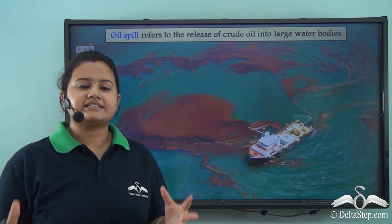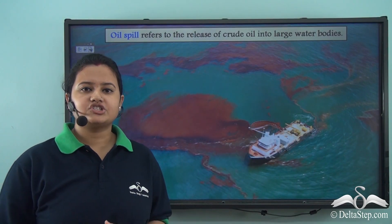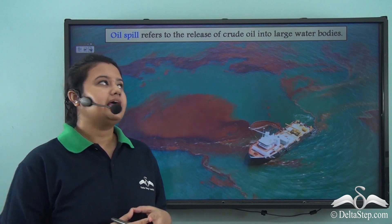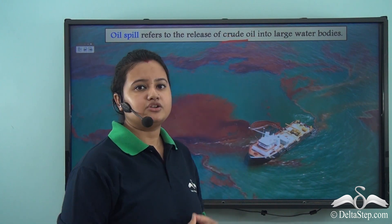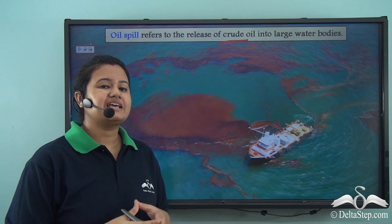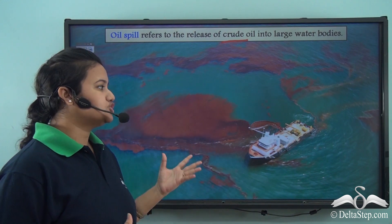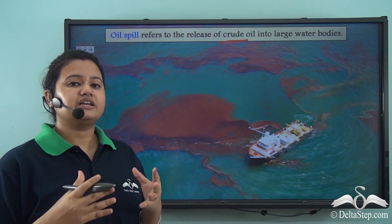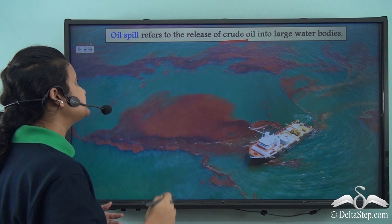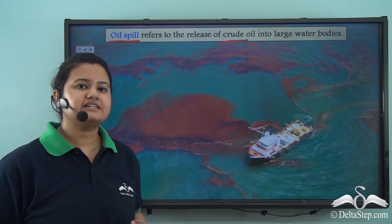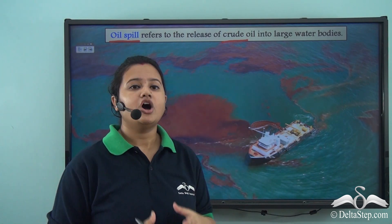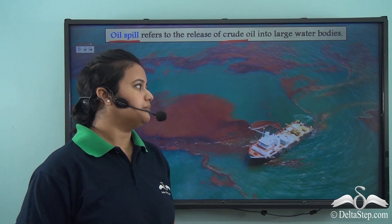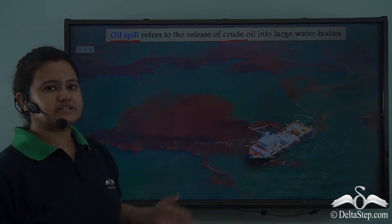This accidental discharge or release of oil like crude oil or petroleum into large water bodies — say oceans or seas — is known as oil spill. So oil spill refers to accidental release or discharge of crude oil or petroleum into large water bodies.